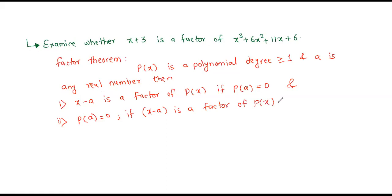In the previous video we have seen this. Now, what they have asked: you have to examine whether x plus 3 is a factor of x cube plus 6x squared plus 11x plus 6. That means if you get remainder equal to zero at x equal to minus 3, you can say it is a factor of the given polynomial.